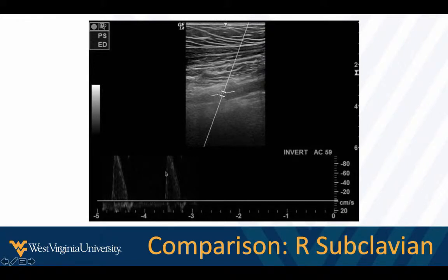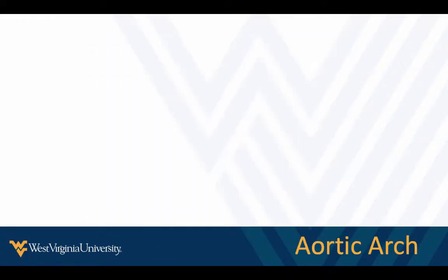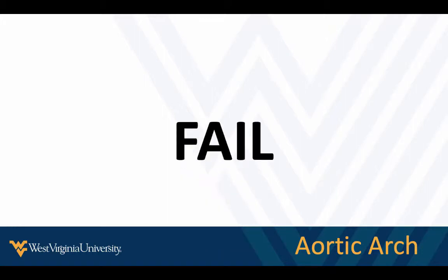I want to find this lesion. We're thinking proximal — the aortic arch, maybe at the origin of the subclavian artery. I tried so hard and failed. But we're not done. This lesion could be somewhere else — even more proximal. Below the arch, could be ascending aorta, or the heart with embolic lesions from the left ventricle.